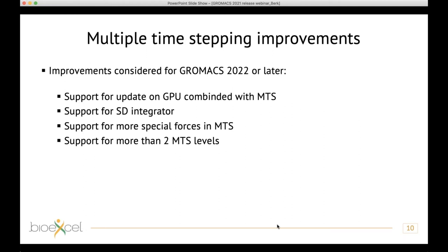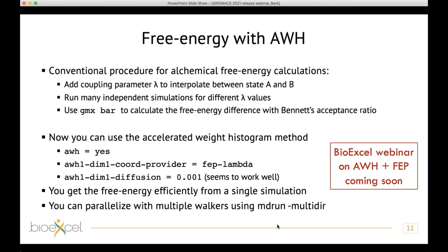The second new feature is free energy calculations with the accelerated weight histogram (AWH) method. AWH has been part of GROMACS for some time, developed by a PhD student working with me, but it could only be used for center-of-mass pulling coordinates. We have now added an extension to the lambda coupling parameter, with most of the work done by Magnus Lundborg.